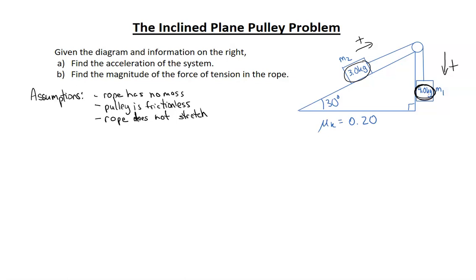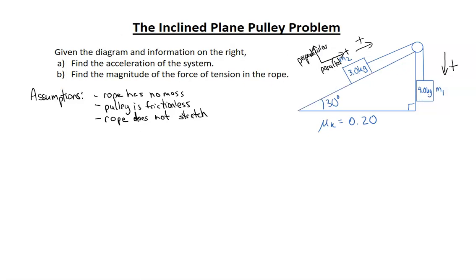With all those assumptions in mind — and these apply to all pulley problems — we need to think about things in terms of the parallel portion and the perpendicular portion. Everything happening along the slope direction is the parallel portion, whether it's the tension or the force of friction. The perpendicular component is what's happening perpendicular to the surface — the normal force Fn. The force of gravity on this mass is not purely in the perpendicular component; we need to break Fg into its parallel component and its perpendicular component.